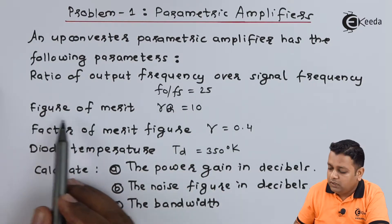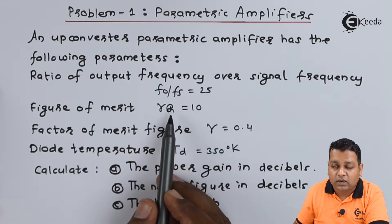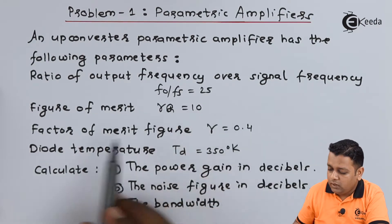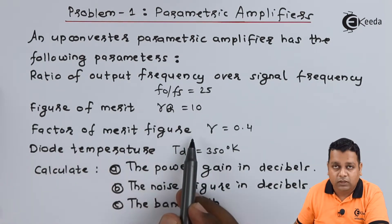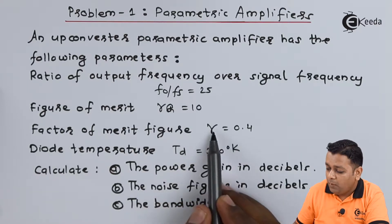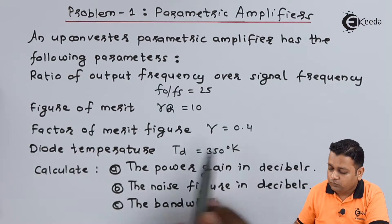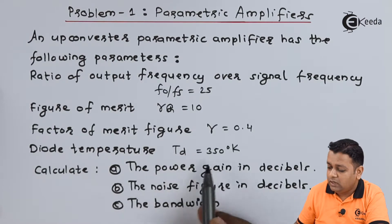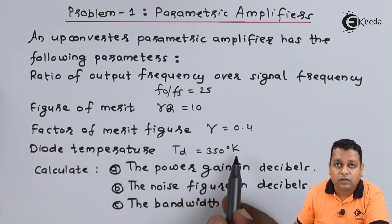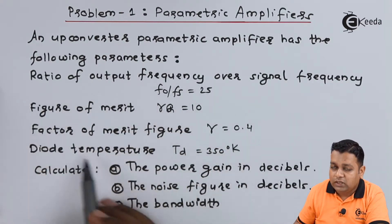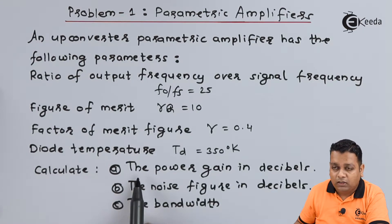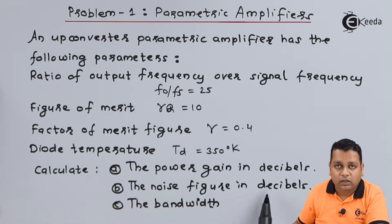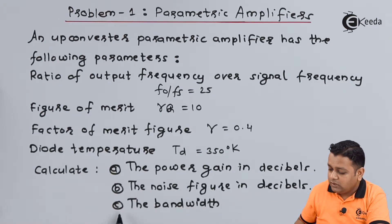The next parameter is the figure of merit, represented as γ multiplied by Q, and this value is equal to 10. The next one is the factor of merit figure, γ, holding the value 0.4. Next is the diode temperature, represented as T_D, with a value of 350 degrees Kelvin. With these given parameters, we are asked to calculate: part A — the power gain in decibels; part B — the noise figure in decibels; and part C — the bandwidth.